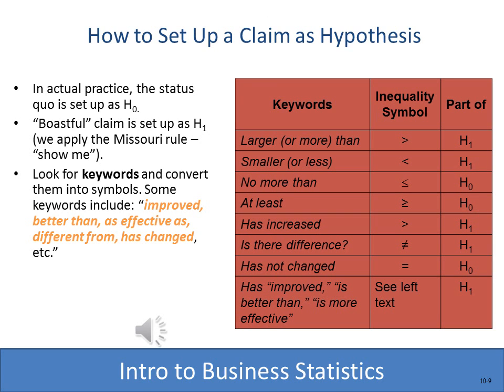The status quo — what's assumed to be true — is the null hypothesis. The claim you're trying to prove is the alternate. A helpful chart translates English words into mathematical symbols: 'larger than' or 'more than' means greater than; 'smaller' or 'less' means less than; 'no more than' means less than or equal to; 'at least' means greater than or equal to; 'is different' or 'is there a difference' means not equal to; 'has not changed' means equal to. The boastful claim you're trying to prove is the alternate; what's assumed, the status quo with no change, is the null.